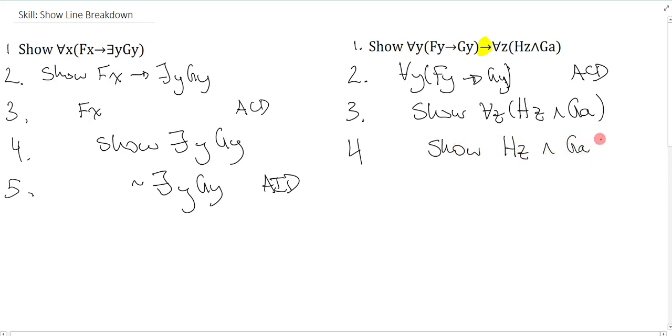This means that I just need to show the arbitrary instantiation of the same letter. So that's Hz and Ga. And notice that this a, which is a name letter, didn't change. It's just left alone. The only thing that changes is I drop the quantifier here, and everything that's tied to the z stays as z. So this a is still a.